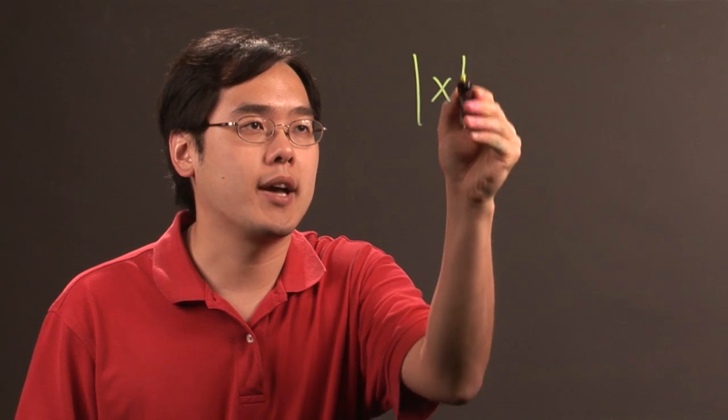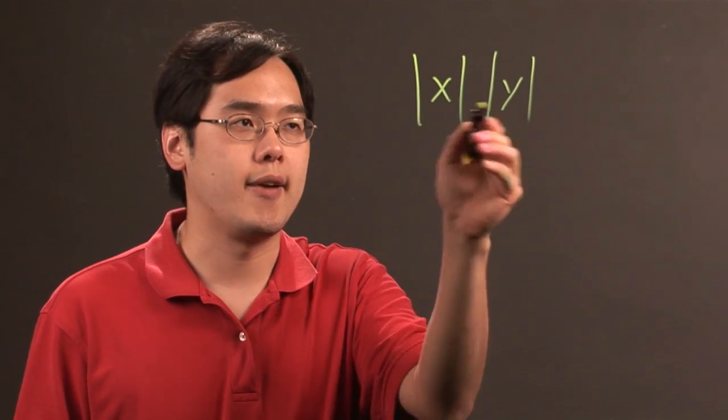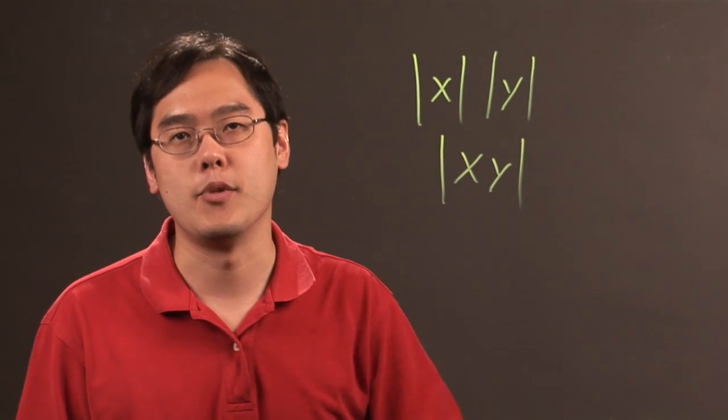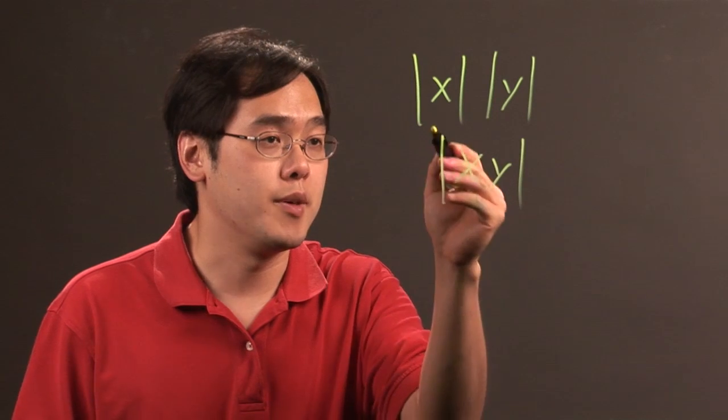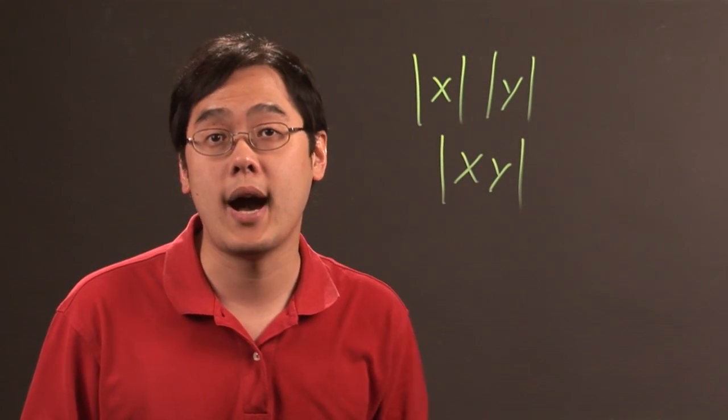Suppose you have the absolute value of x times the absolute value of y. Since we're talking about distances after all, it's just like multiplying the two together and having the absolute value of xy with the bars surrounding them. That's actually okay because at the end of the day they're both going to be positive.